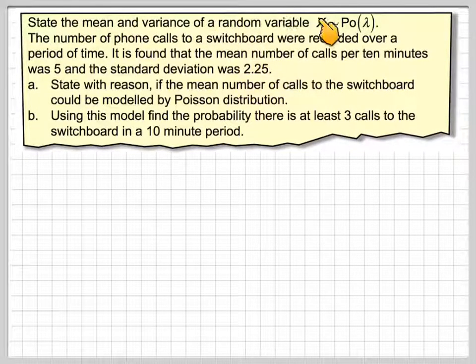State the mean and the variance of the random variable x belongs to a Poisson distribution parameter lambda. The number of phone calls to a switchboard were recorded over a period of time. It is found that the mean number of calls per 10 minutes was 5 and the standard deviation was 2.25.